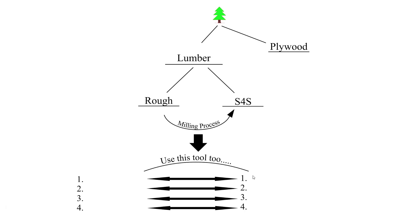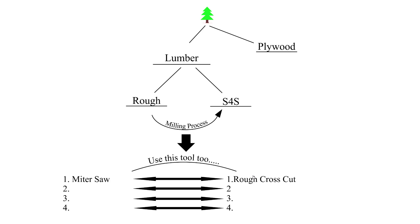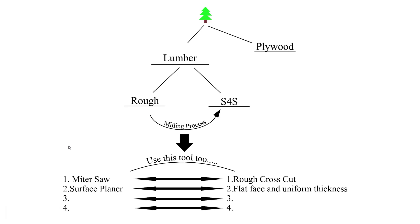Step one: we're going to use the miter saw to make a rough cross cut. A rough cross cut means approximate — not 24 and 3/16 of an inch, but about 23 or 24 inches. After we've cut our board to length, we go to the surface planer. The surface planer makes flat faces and makes the board the same thickness down its entire length — we call that uniform thickness.